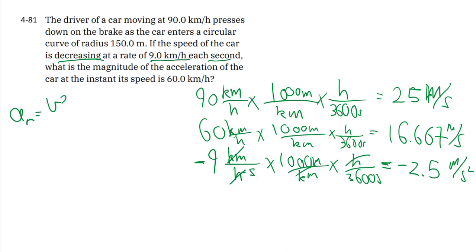So now that everything is meters per second, we can work out the radial component. And they're specifically referring to the time when the speed is exactly this much, so it doesn't matter if it started at 90—it's at this particular instant. What is the speed squared divided by the radius, which is 150 meters, nice and big.